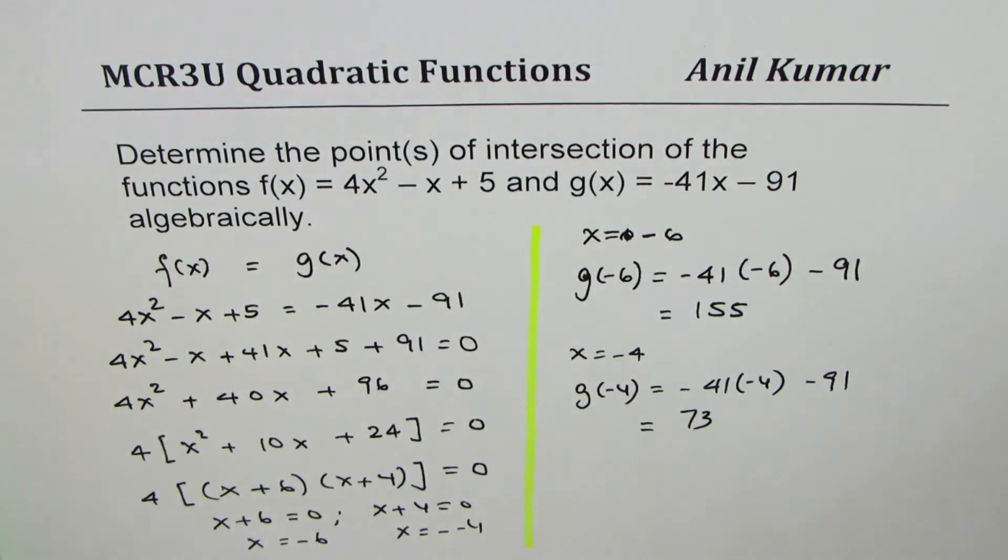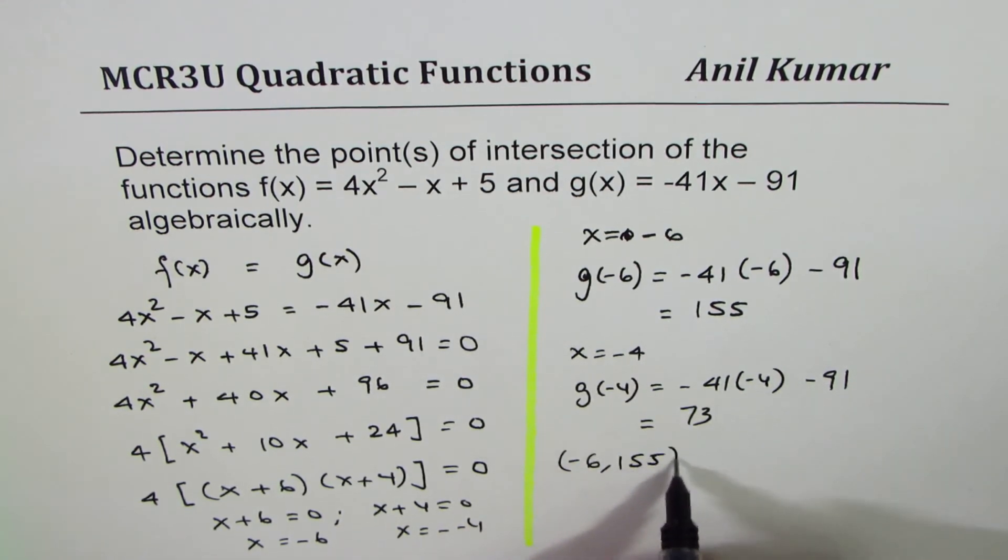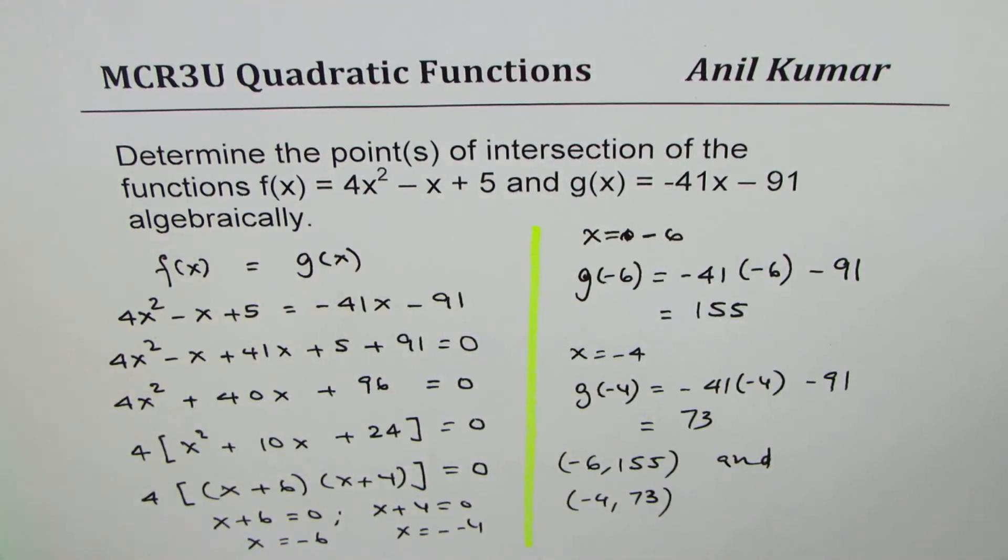73. So that gives you coordinates of two points. And these are (-6, 155) and (-4, 73). That becomes the answer for the given question.